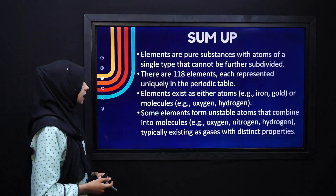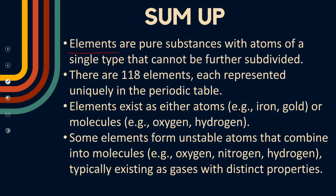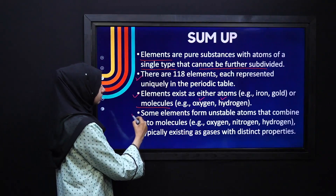Let's summarize our lesson. In today's lecture, we have studied about elements. Elements are pure substances with atoms of a single type that cannot be further subdivided. We have 118 elements arranged in the periodic table. Elements either exist as atoms — like iron or gold — or exist as molecules, for example oxygen and hydrogen, because individually they are unstable.